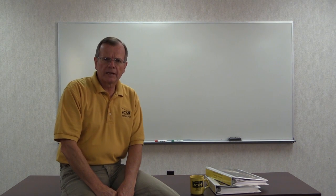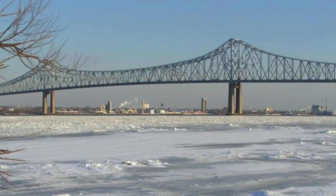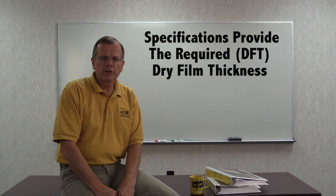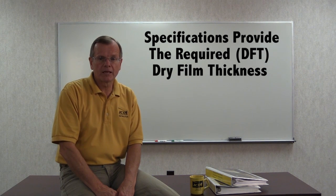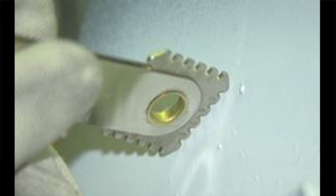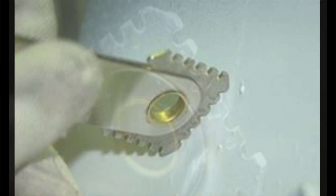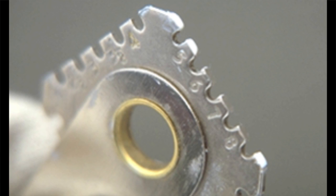For coatings to perform as designed, a continuous film of proper thickness must be applied. Most coating specifications indicate the dry film thickness, or DFT, required for each layer to be applied, but the painter can't wait until the next day to determine whether the proper thickness has been achieved. Instead, measurements of the wet film thickness must be taken while the coating is being applied so that adjustments to the application process can be made.